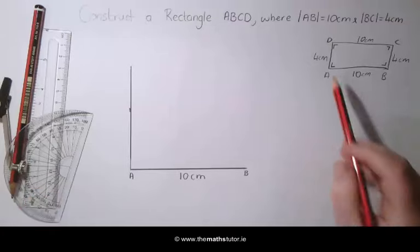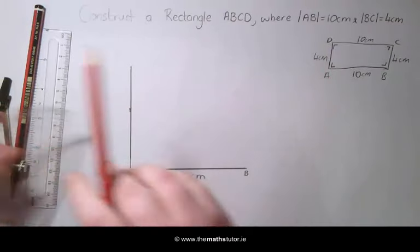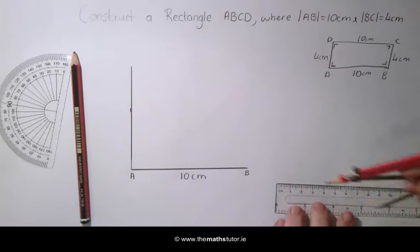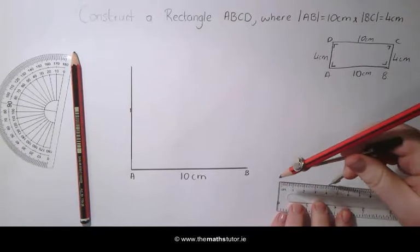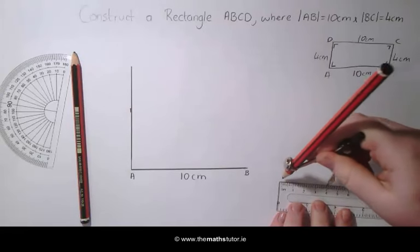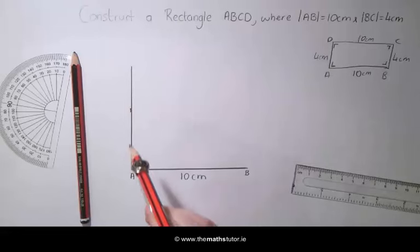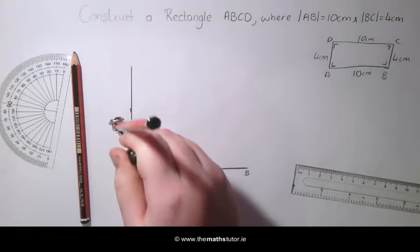We know this side needs to be 4cm, so using our compass, we are going to measure a length of 4cm. Placing it on A, we are going to mark an arc across this line.